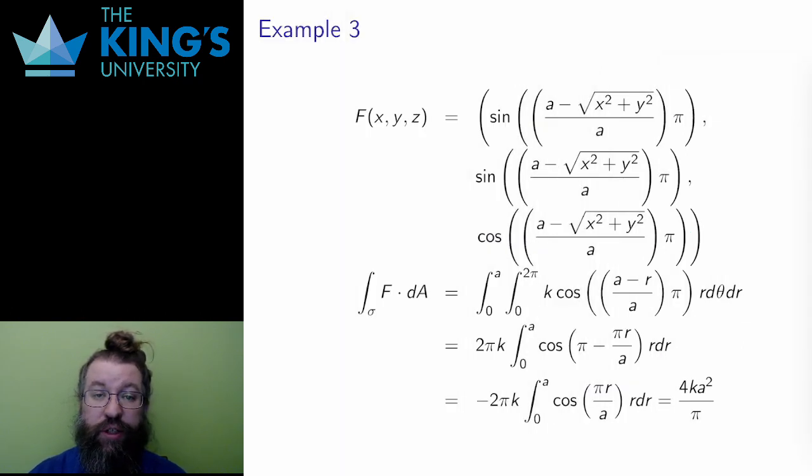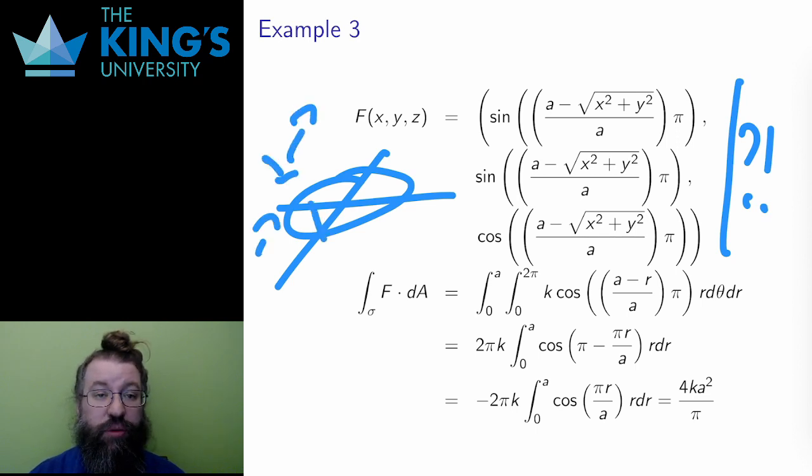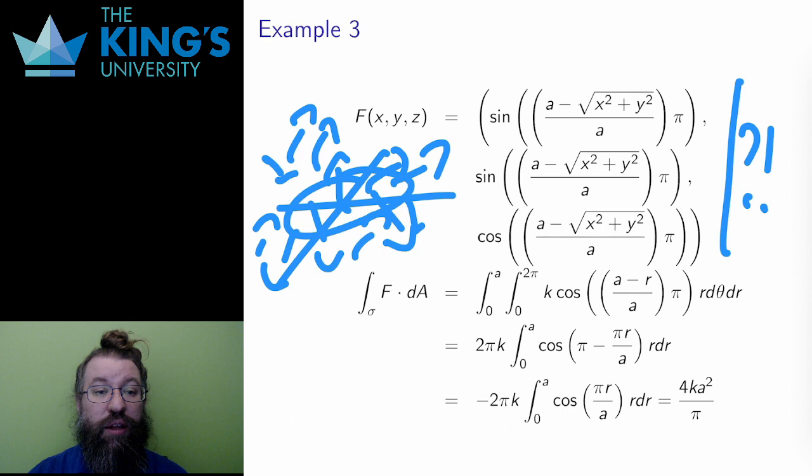Finally, here is another example, still with the same surface and the same normal, but with an even more complicated field. This field has movement in all directions and complicated movement, with sines and cosines. So this is some kind of turbulent flow. There are perhaps vortices or eddies, and the field goes backwards and forwards all around the disk.